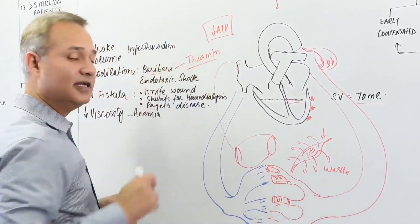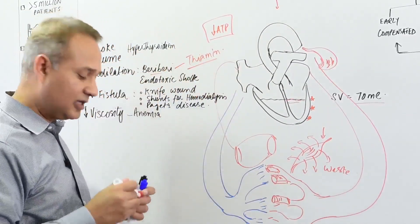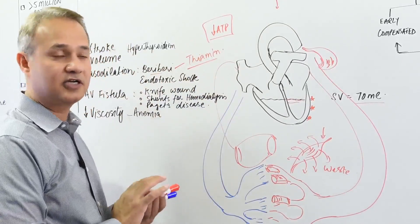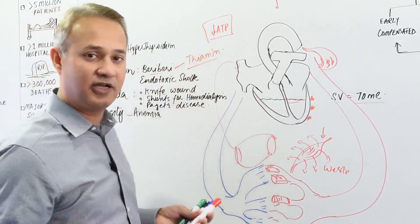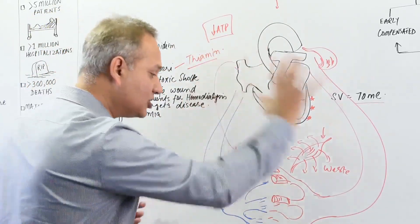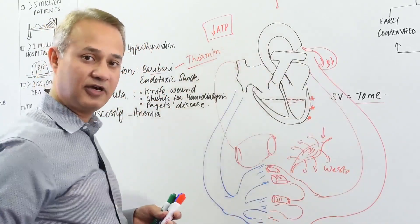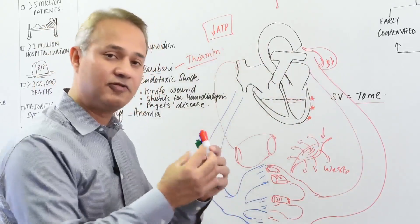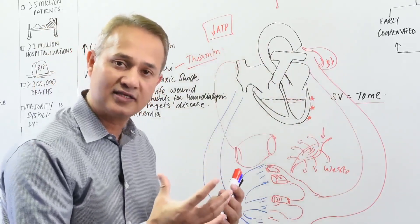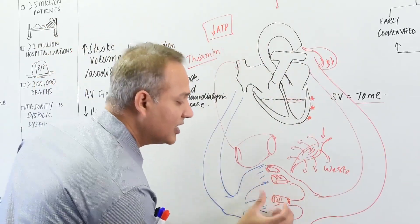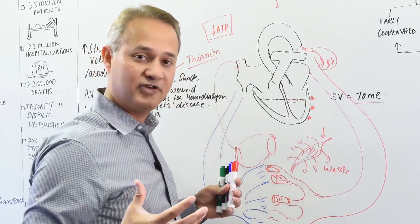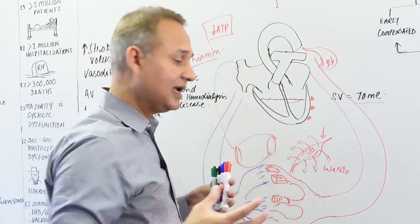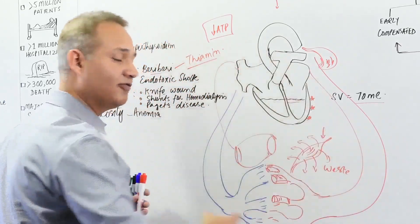When the energy is not present, there are two types of problems that will occur. One, the heart itself doesn't have enough energy. Second, the tissue, the vascular system doesn't have enough energy. When the muscles do not have enough energy, what will they do? They would dilate, they would relax. When the muscles dilate and relax, the diameters would open up, the vessel diameters would expand.